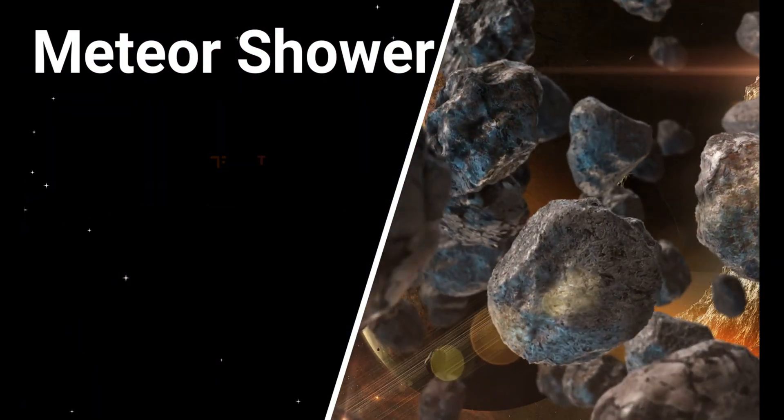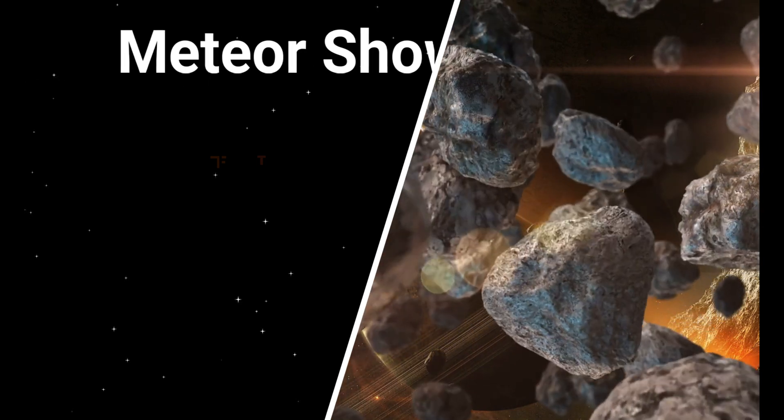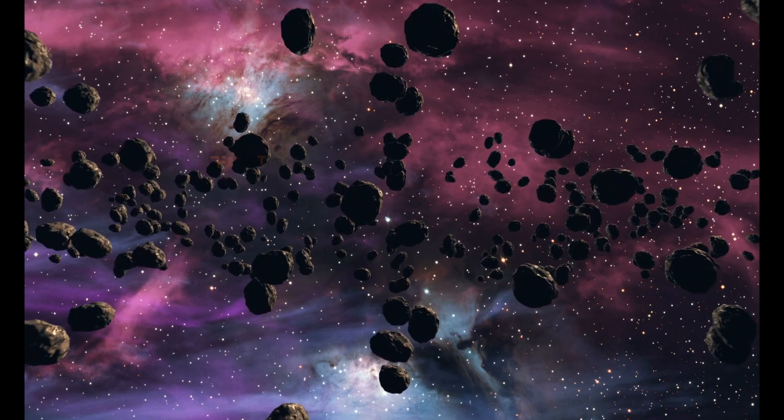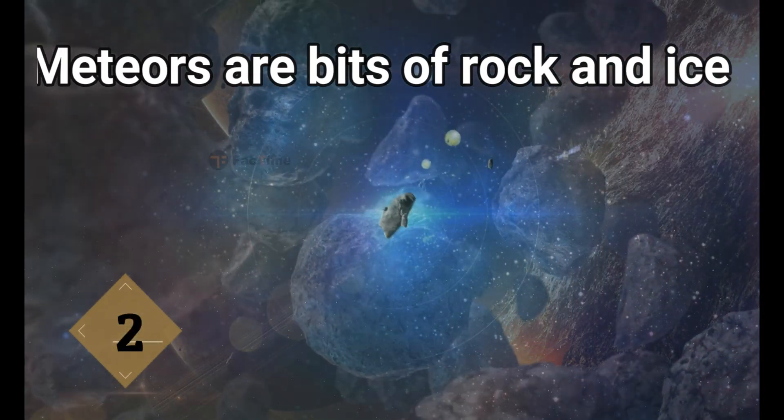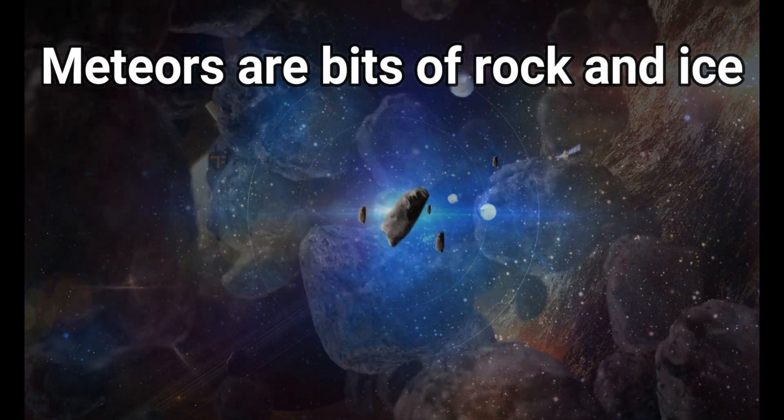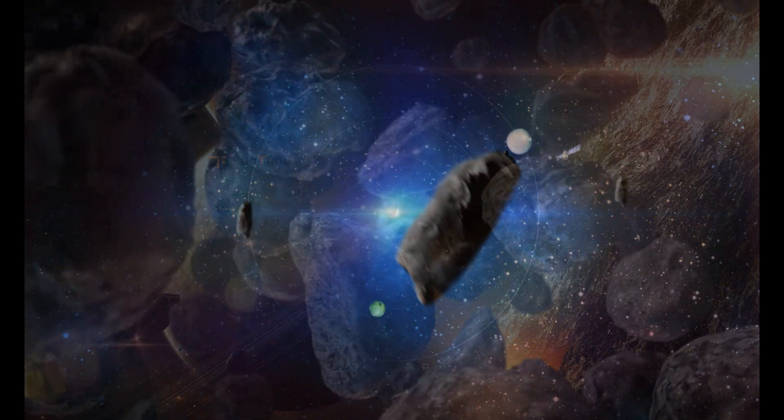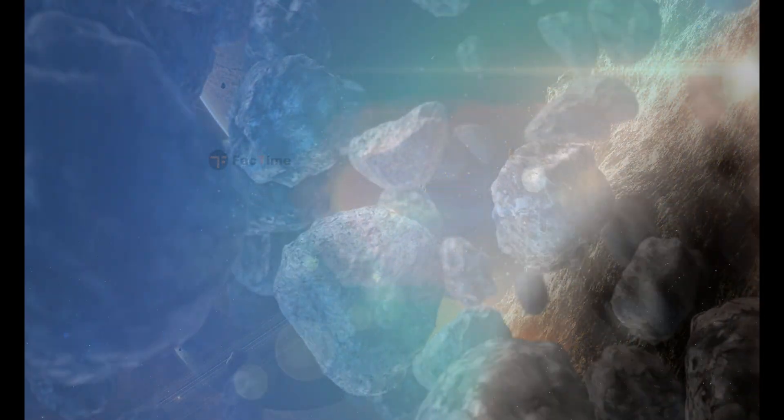A meteor shower occurs when the earth passes through the trail of debris left by a comet or asteroid. Meteors are bits of rocks and ice ejected from comets as they move in their orbit about the sun.